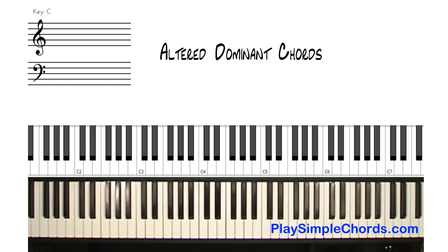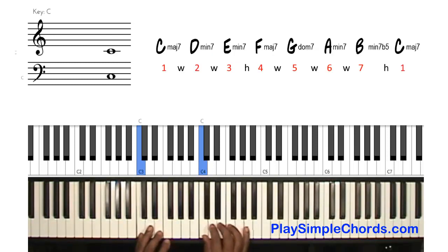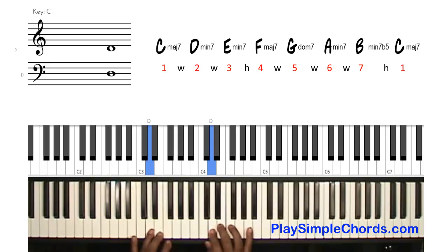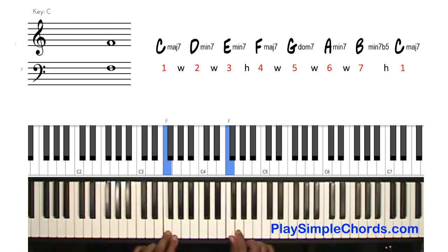Keep in mind that dominant chords can be altered more so than any other chord in the scale. So the chords I'm going to show you are altered dominant chords, and we'll be using the tritone for the key of C. Let's first look at the notes in the key of C: C is one, D is two, E is three, and F is four.